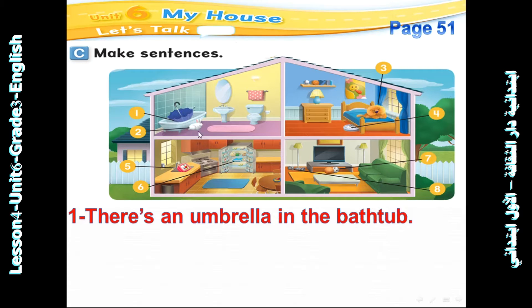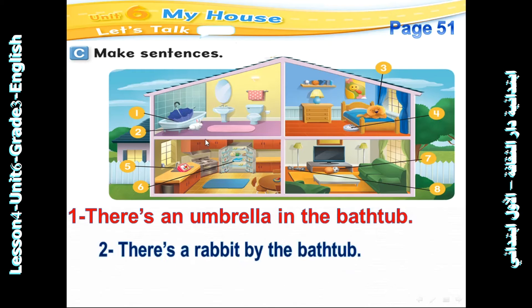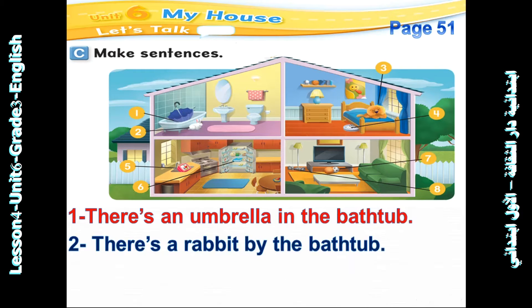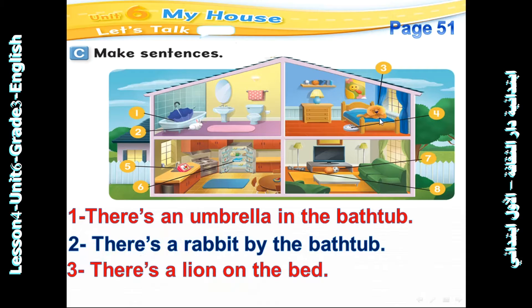Look at number two: There is a rabbit by the bus stop. Look at number three: There is a lion on the bus stop.